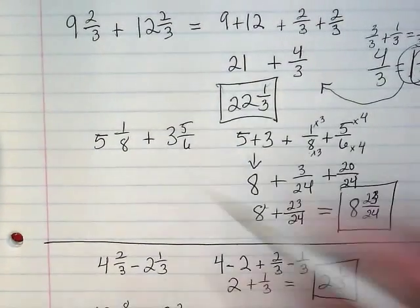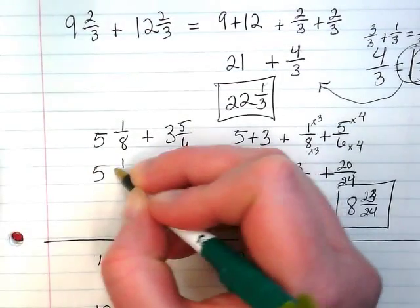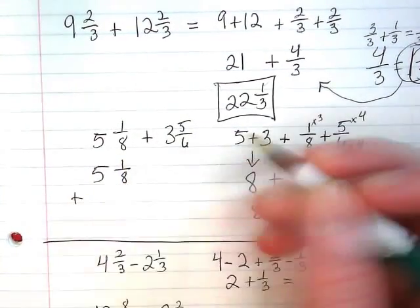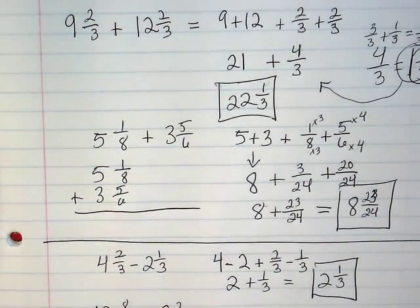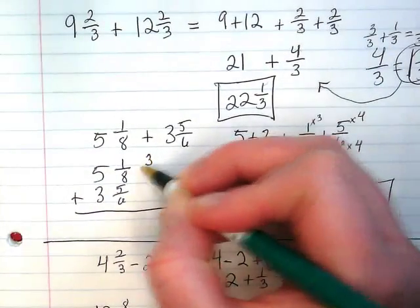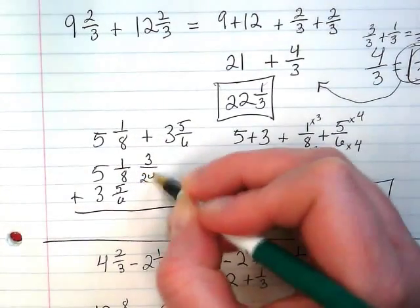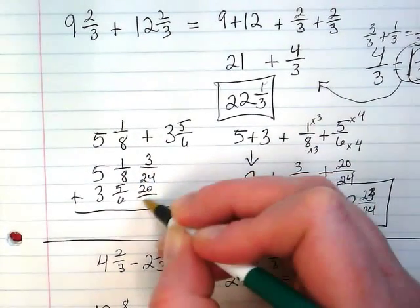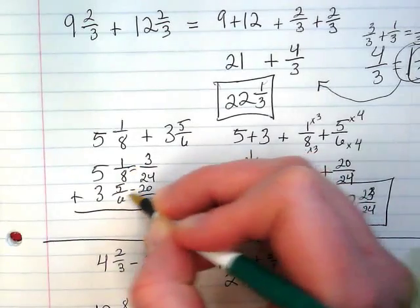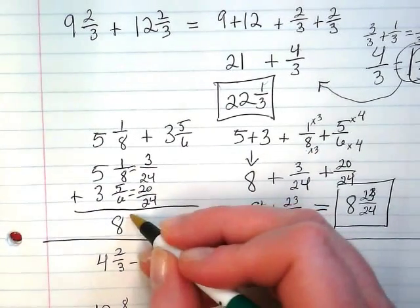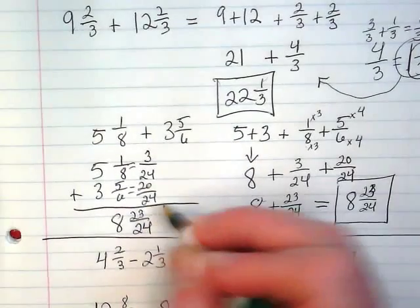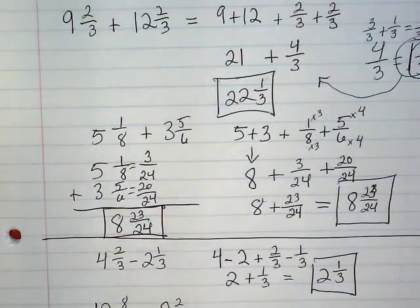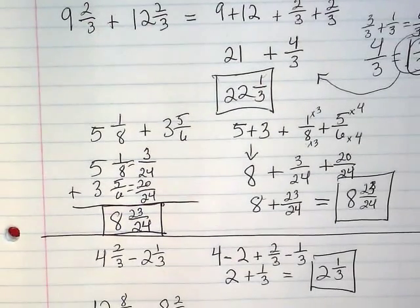Let's just pop back up here real quick. I could have done 5 and 1 eighth plus 3 and 5 sixths. And when I converted those fractions, I could have put them right next to it. And I would have had 8 and 23 24ths. Again, just a slightly different way to write the same problem. Depends on what works visually for you and your organization.